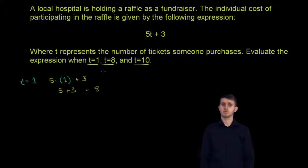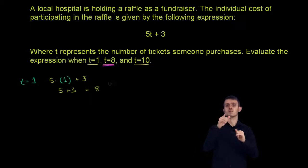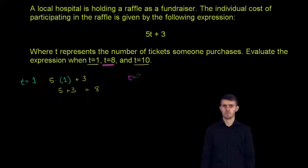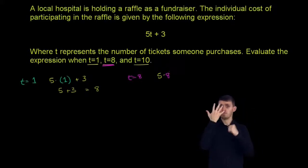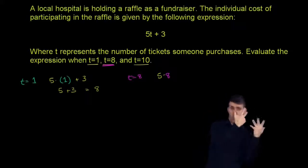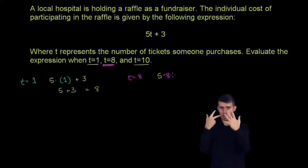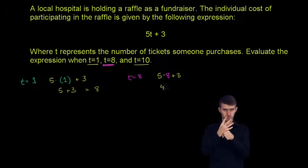Now let's do it when t is equal to 8. So when t equals 8, this expression becomes 5 times 8 plus 3. Once again, 5 times 8 is 40, and then we have the plus 3 there. So this is equal to 43.